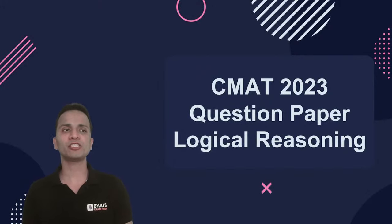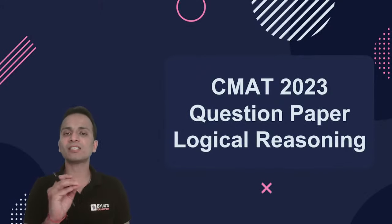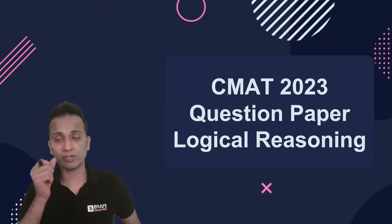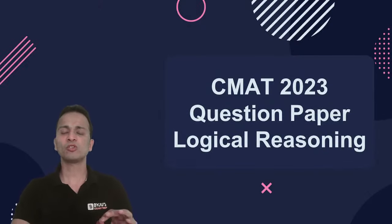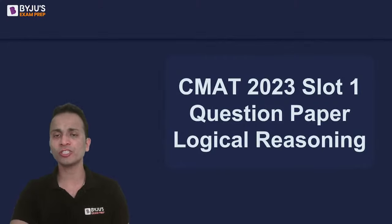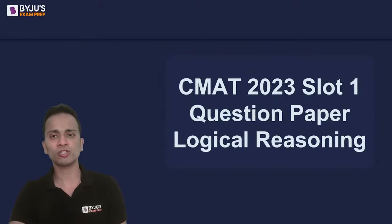Students who are preparing for other examinations and studying logical reasoning can also be part of this session, as it will help them in revising these topics. Now, the actual questions that appeared in CMAT logical reasoning section are going to be discussed here. Let us begin with the first slot of the question paper of CMAT 2023 logical reasoning section. We'll be considering only the analytical reasoning questions, not the verbal reasoning questions. In each slot out of 20, there were 13 questions of analytical reasoning and 7 questions from verbal reasoning.